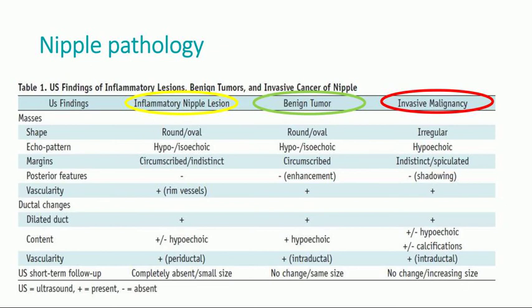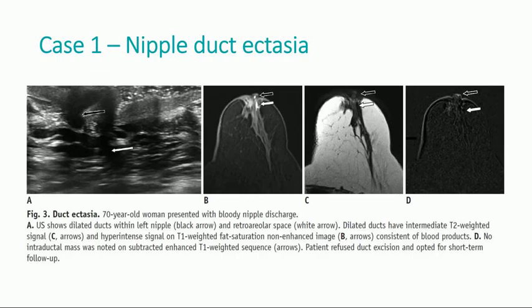I will now exemplify with cases selected from the paper. Case number one: nipple duct ectasia in a patient presented with bloody nipple discharge. Ultrasound shows dilated ducts within the left nipple and the retroareolar space. The dilated ducts have a hyper-intense signal on T1-weighted fat saturation non-enhanced image, consistent with blood products.